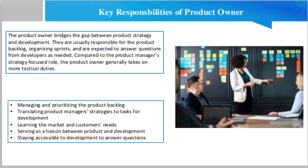The second responsibility is translating product managers' strategies into tasks for development. When we say product owners manage the backlog, we don't simply mean they move existing user stories and task-level details around. Product owners must be more proactive than that. In many cases, they are responsible for drafting or at least refining user stories into tasks that the development team can execute on. Product owners take initiatives from the product managers, break them down into stories or actionable chunks of value, and work with the engineering team to implement them.